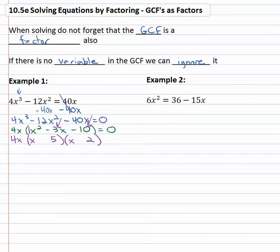Well ten is five times two and if it's negative five and positive two, it will add to negative three. Nice little shortcut we can use when there's a one in front of the squared variable.